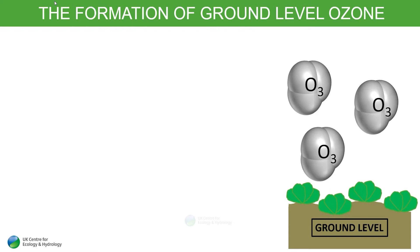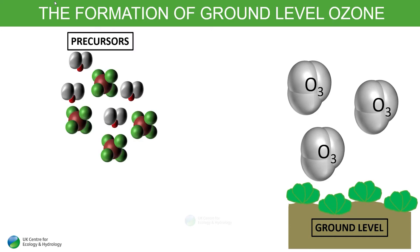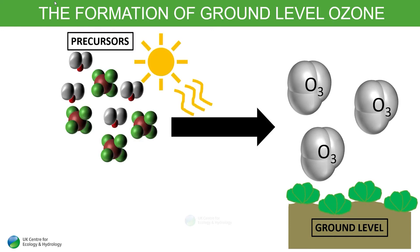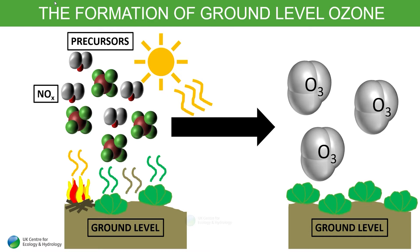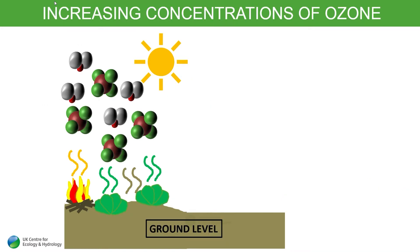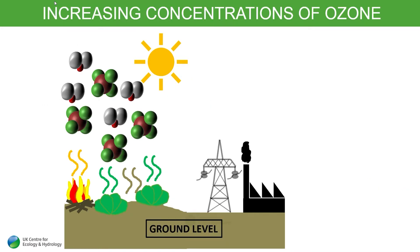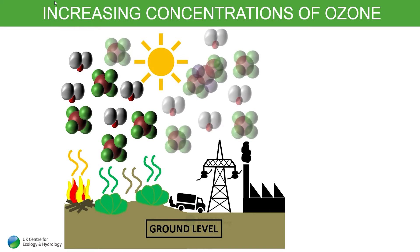Ozone at ground level can be natural. It forms from other molecules known as precursors when they react with sunlight. Soils, vegetation and fire emit precursors. Precursors include nitrogen oxides NOx and volatile organic compounds VOCs. Industrial processes, electricity generation and transport produce these same compounds.